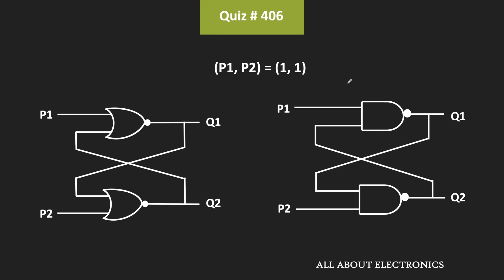Similarly, let's see the output of this NAND gate based latch. Here also, both inputs are 1, 1. Initially Q1 and Q2 were 1 and 0. So Q1 was 1 while Q2 was 0, and the same 0 appears at the other input. Since one of the inputs of the NAND gate is 0, its output will be equal to 1 — so Q1 will remain 1. The same 1 appears at the second NAND gate, and since both inputs are 1, its output will remain 0, so Q2 will remain 0. That means whenever P1 and P2 were 0, 1, Q1 and Q2 were 1, 0; and once it becomes 1, 1, the outputs still remain 1, 0.